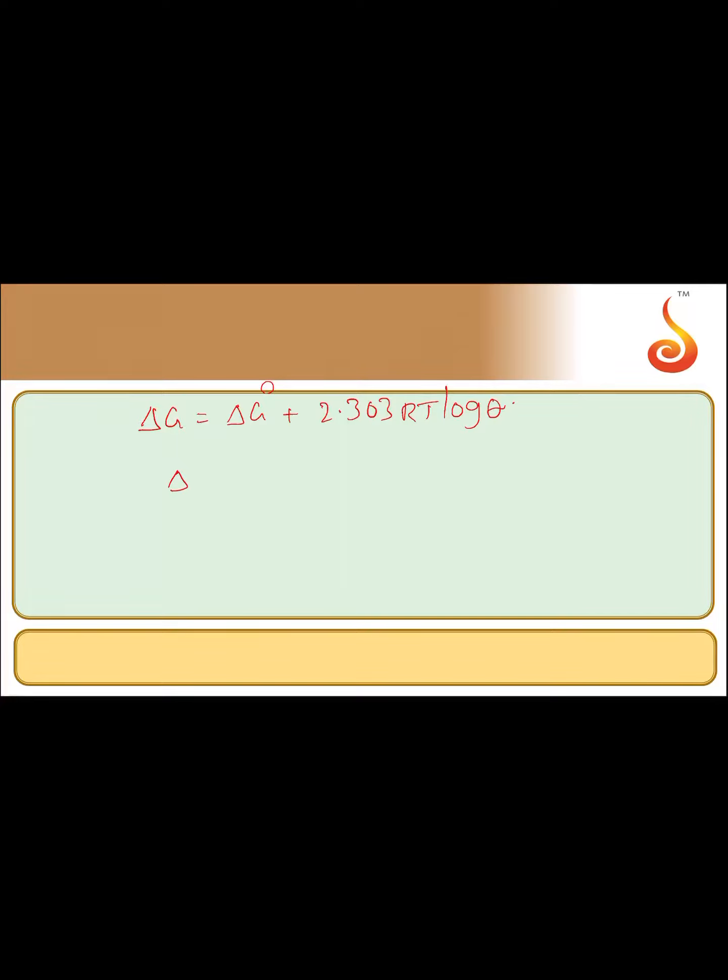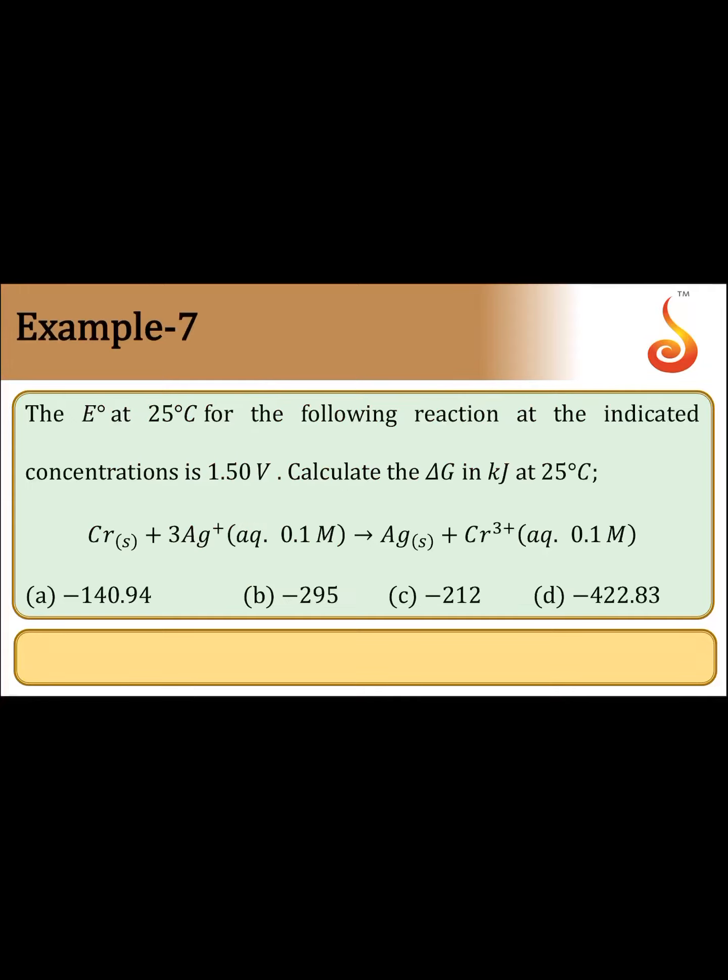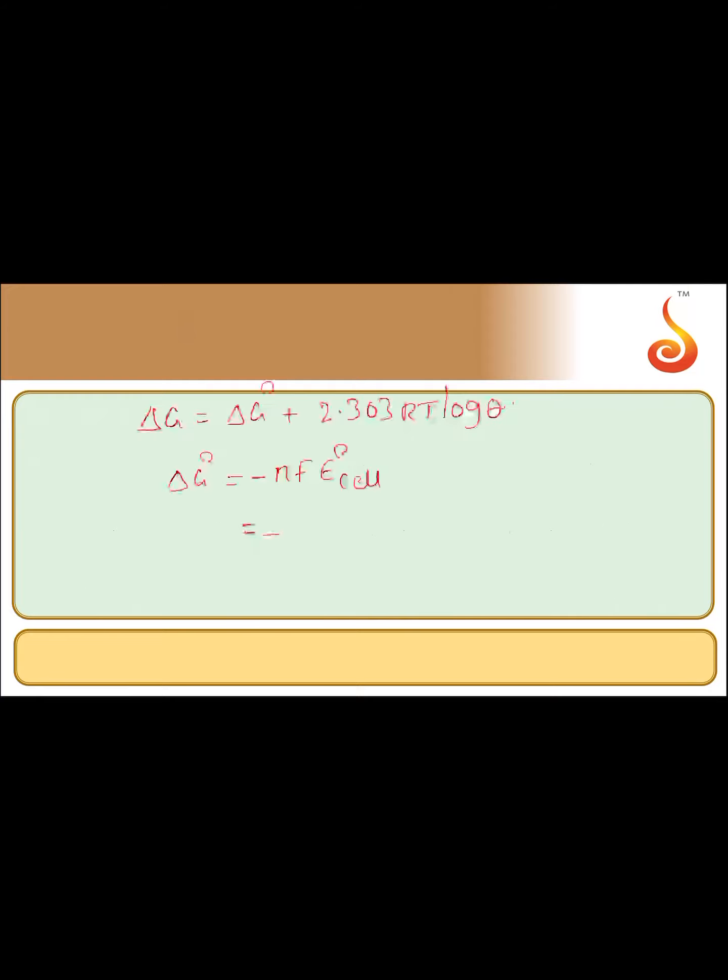First of all, delta G0 value we can calculate. Delta G0 is equal to minus NF E0 cell, where N is number of electrons. How many electrons? Cr is converting into Cr plus 3, and 3 Ag plus is converting into Ag. So difference is 3. That means 3 electrons. So N value is 3.